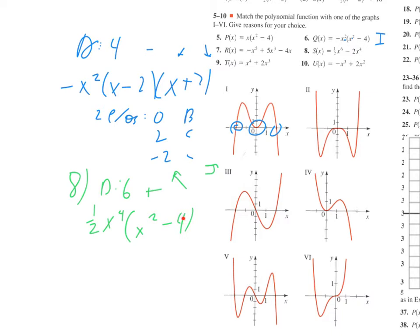That's because if you GCF out a one half, this number is actually going to get bigger — if you multiply it back in, it turns back into the two that it is. So I can break that apart as x plus two times x minus two. It's going to have the same zeros as number six, but facing up instead of facing down. So that's definitely Roman numeral two.